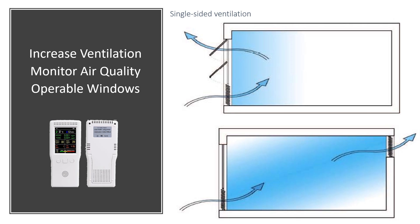Eight, you can meet a higher level of engineered natural ventilation in accordance with option 2 of the prereq. Nine, you can monitor CO2 in all densely occupied spaces. And ten, for spaces where air contaminants are likely, you can monitor additional contaminants besides CO2.